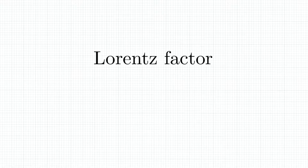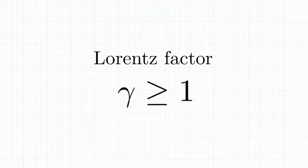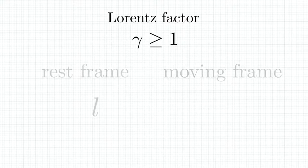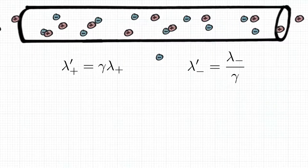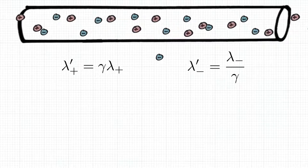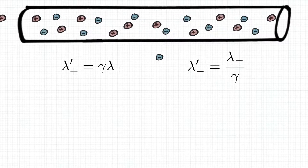This length contraction is quantified by a factor called Lorentz factor, written as gamma. For now all I want to say is that it is a number greater or equal to one that allows to compare lengths in different frames of reference. So L in the rest frame becomes L over gamma in the moving frame, or L in the moving frame becomes gamma L in the rest frame. That means that our charge density, when compared to the previous frame of reference, is multiplied by gamma for the positive charge and divided by gamma for the negative charge. To express that, we write lambda plus prime equals gamma lambda plus and lambda minus prime equals lambda minus over gamma.